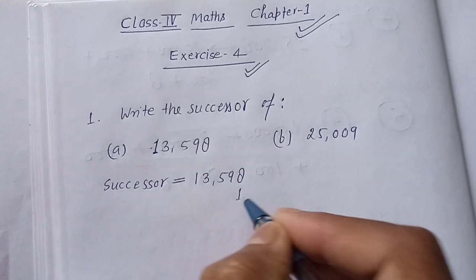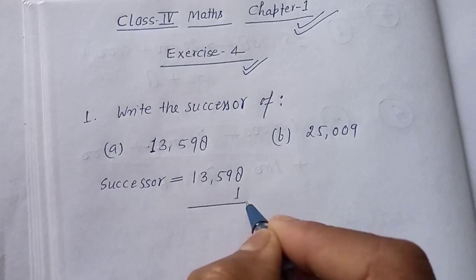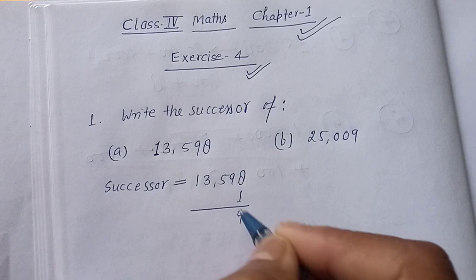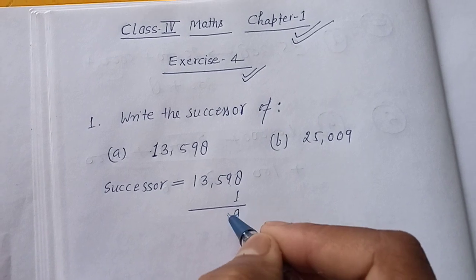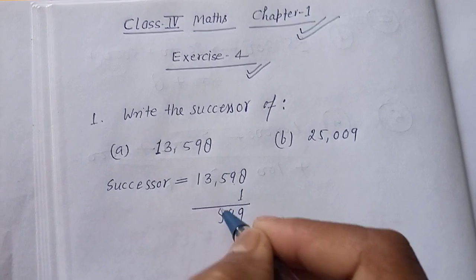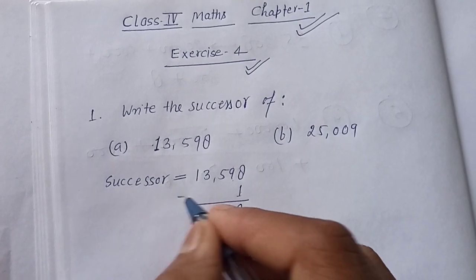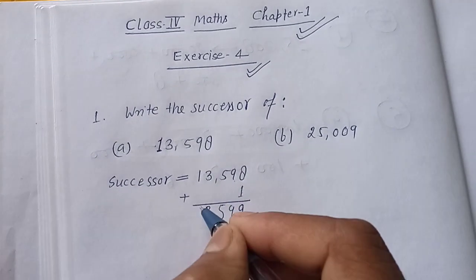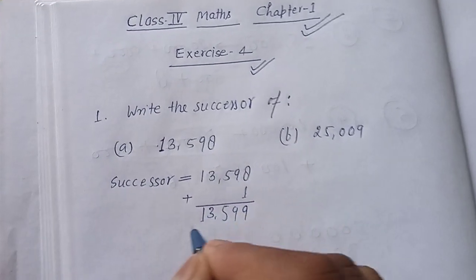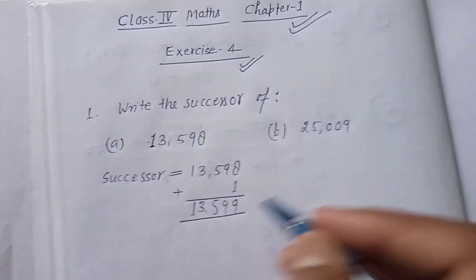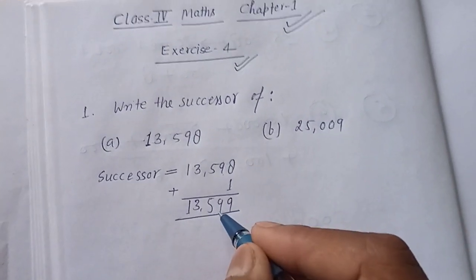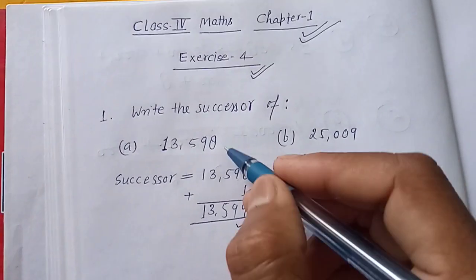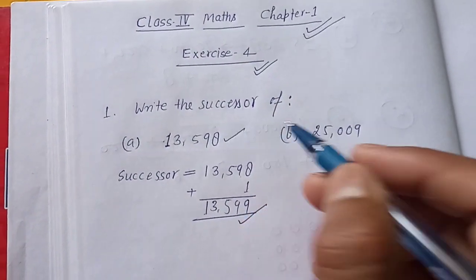When we add 1 to 13,598 — 8 plus 1 is 9, here we get 9, and the remaining digits stay as 5, 3, 1. So 13,599 will be the successor of 13,598.